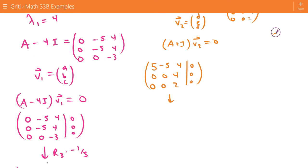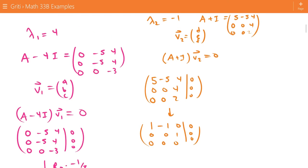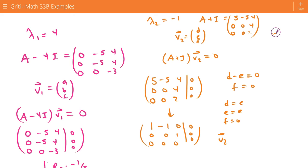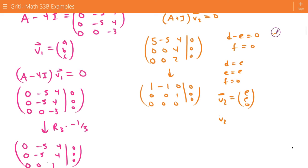If I row reduce this, and I'll just do this one in my head, you can check my work. This tells us that D minus E equals 0, and F equals 0. So that means D equals E, E equals E, and F equals 0. That means V2 is equal to E, E, 0, and if we set E to be 1, we get 1, 1, 0 as our second eigenvector.